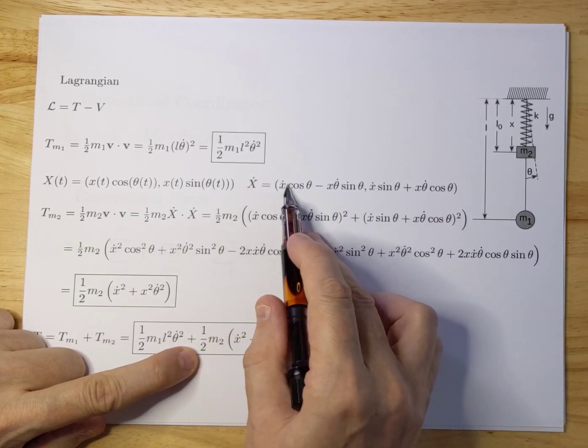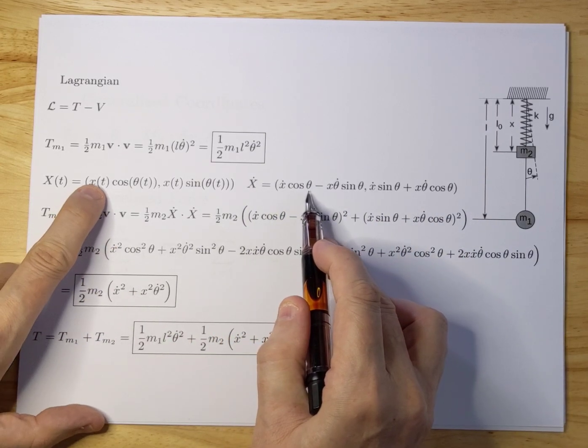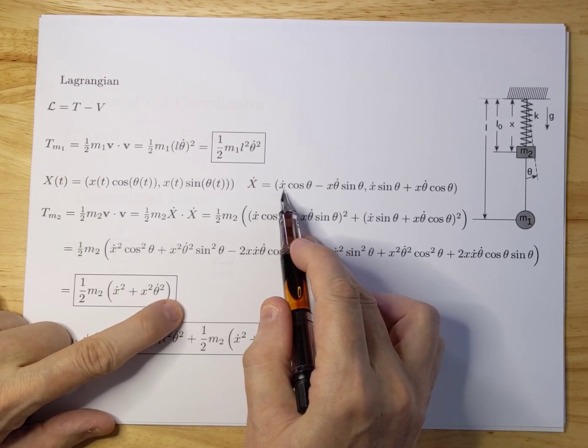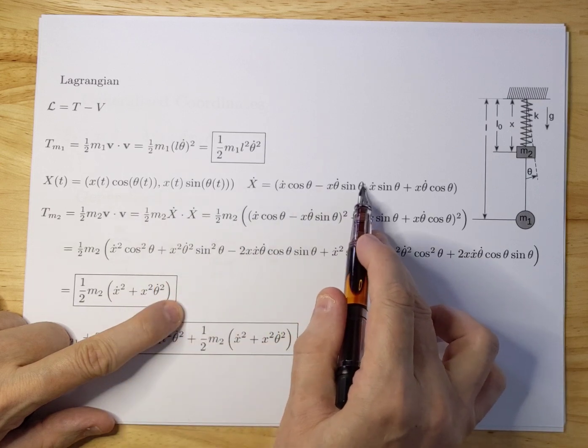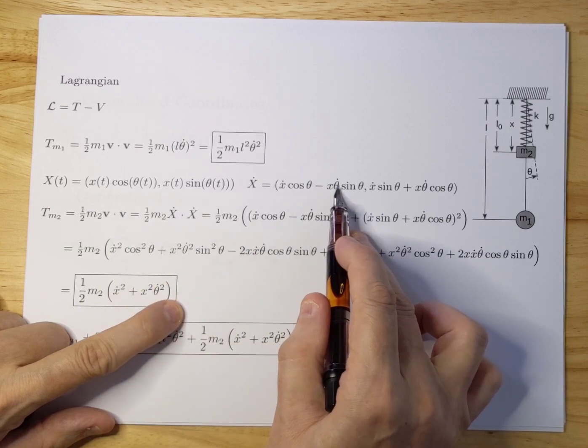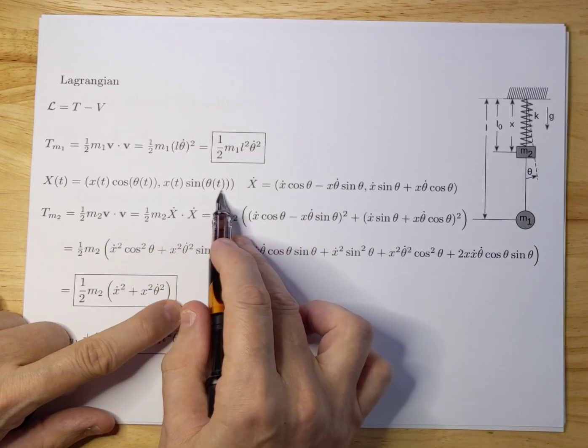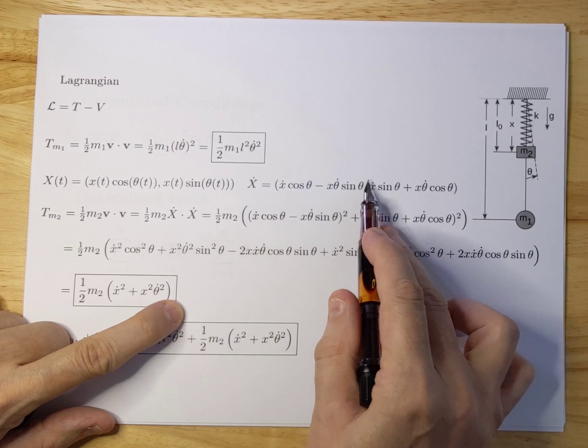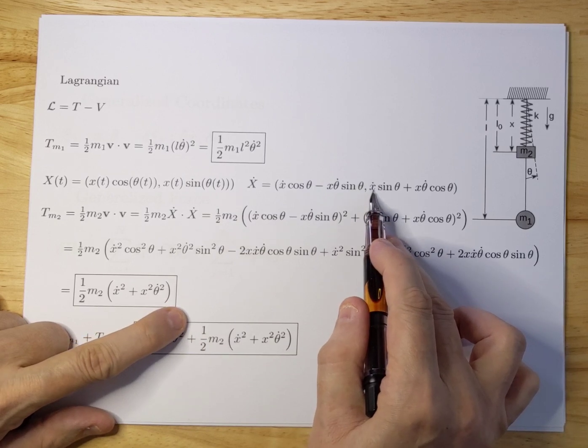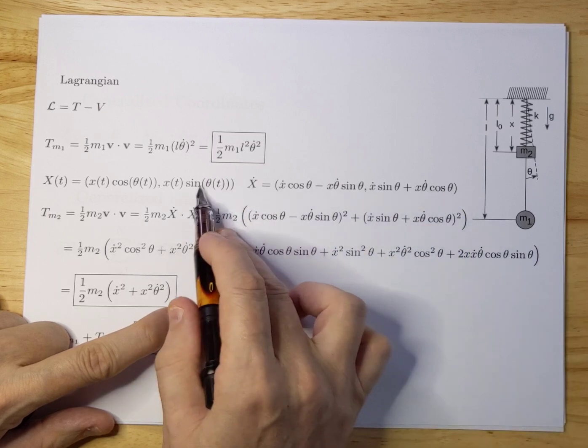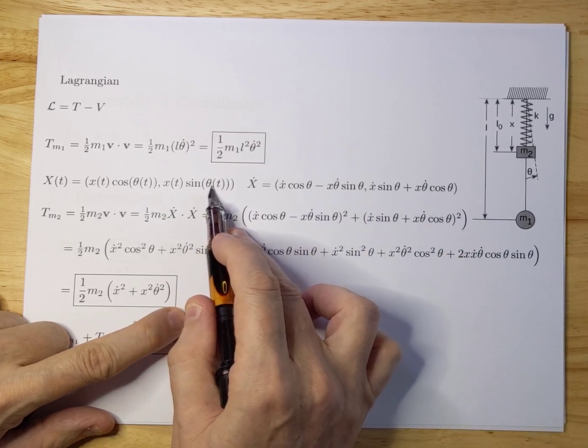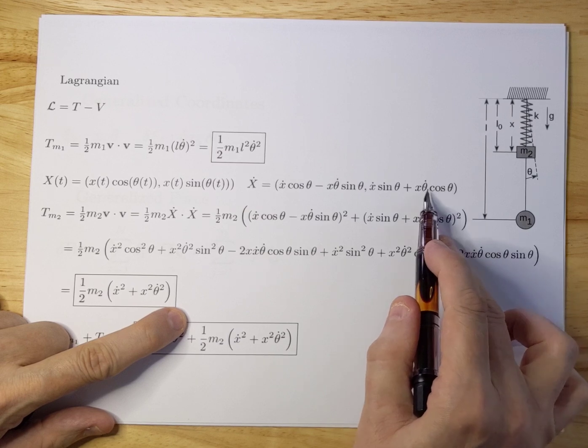X dot is X dot cosine theta, so first you differentiate towards the first component using the product rule, then you differentiate towards theta which is minus sine theta times d theta dt, or theta dot. We do the same here with X sine theta. First differentiate towards X which gives X dot sine theta, then you leave X alone and differentiate sine theta towards t which gives you cosine theta theta dot.